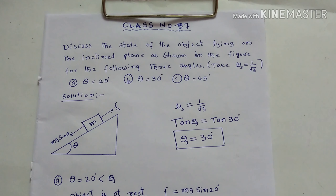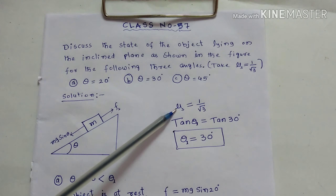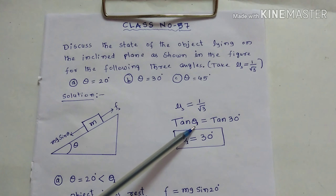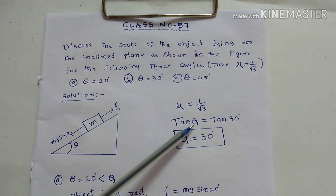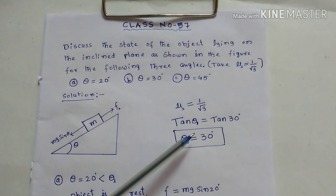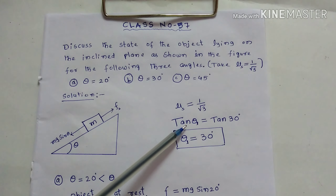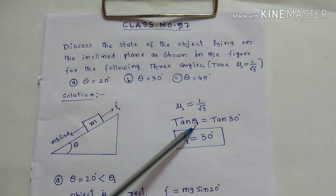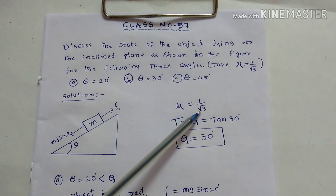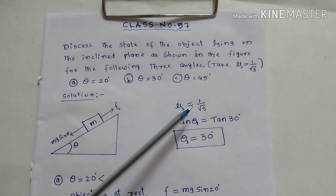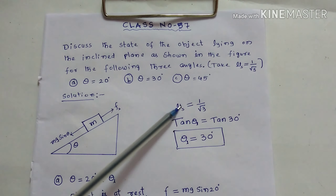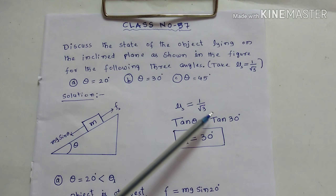For the given value of mu s, the coefficient of static friction, what is the angle theta at which the force of static friction is maximum? We derived in previous classes: mu s is equal to tan theta. I am calling this particular theta as theta L. So tan theta L equals mu s equals 1 by root 3, which is tan 30 degrees. So theta L will be 30 degrees.